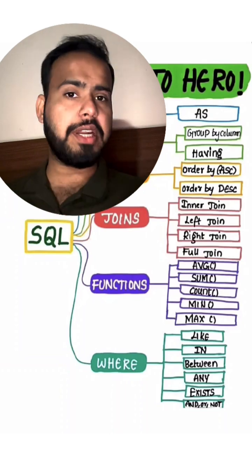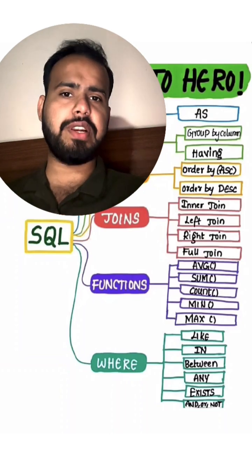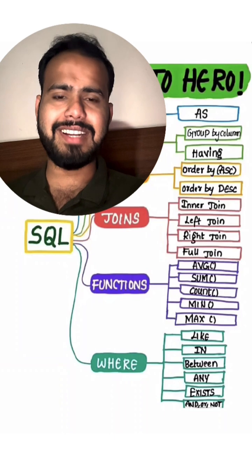So with the IN query, you can add multiple kinds of values and then filter the column values, or you can say the table row values.